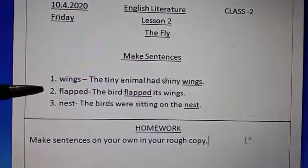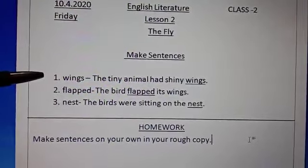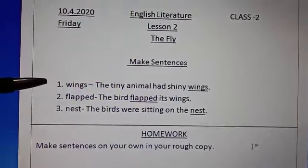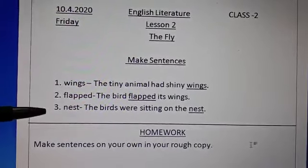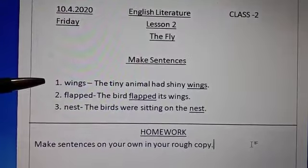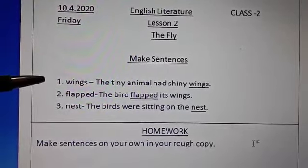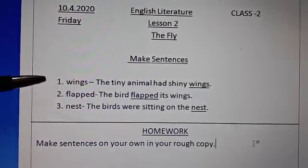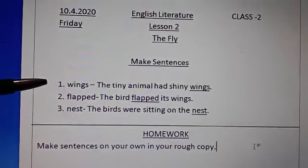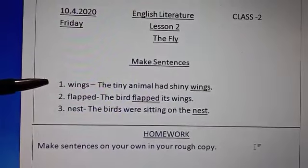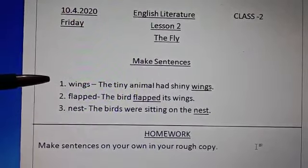Children, there are three words of which you have to make sentences. The words are: wings, flapped, and nest. Now coming back to the first word — wings. The sentence is: the tiny animal had shiny wings. Whenever you make a sentence of a particular word, you will underline that word with blue crayon.